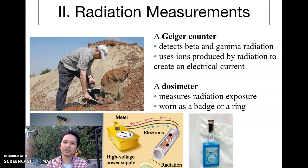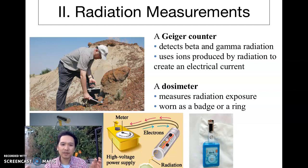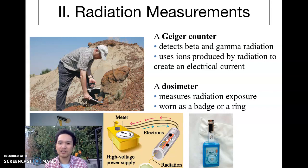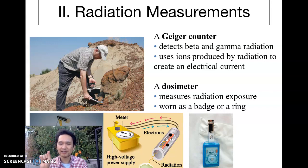Radiation is measured with a Geiger counter. The Geiger counter detects beta and gamma radiation. It will just go tick, tick, tick, tick. And once it detects heavy radiation, it will tick faster. When you see less radiation, it goes lower. It uses ions produced when radiation is collected in the instrument and creates an electrical current for that sound.